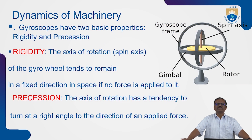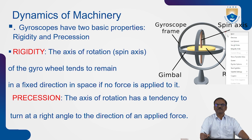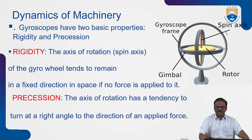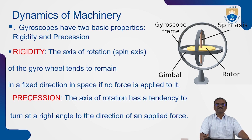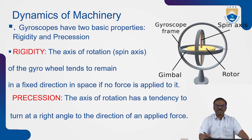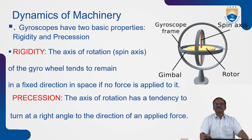A gyroscope has two basic properties: rigidity and precession. The axis of rotation — the spinning axis — has a rotor and the whole assembly is put in a gyroscopic frame with a gimbal inside. Rigidity means the axis of rotation of the gyro wheel tends to remain in a fixed direction in space if no force is applied to it. Precession means the axis of rotation has a tendency to turn at right angles to the direction of the applied force.